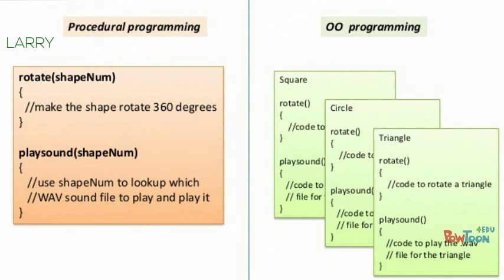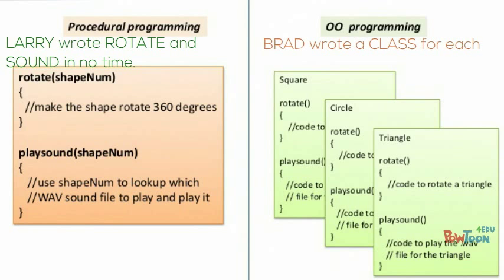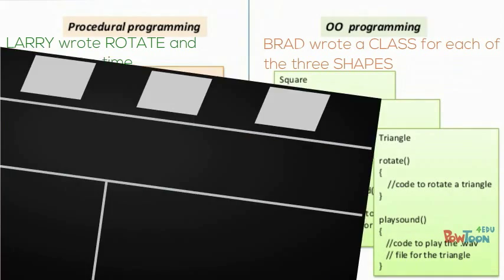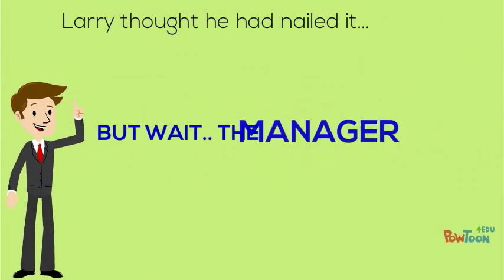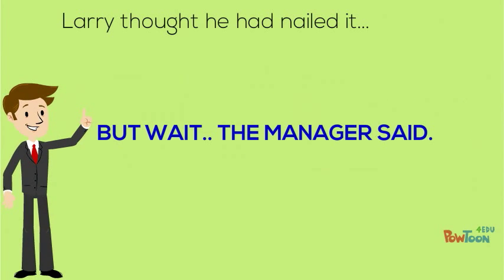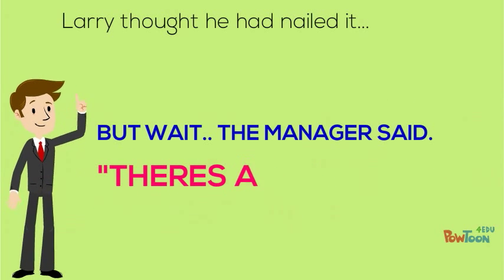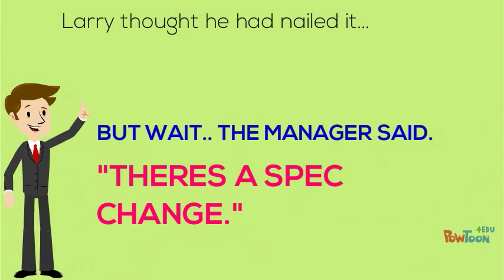Now here's how Larry's and Brad's code looked like. You can see the difference between the procedural code and the object oriented one. After seeing the code, Larry thought to himself: wow, I have nailed this. I am surely getting the chair.